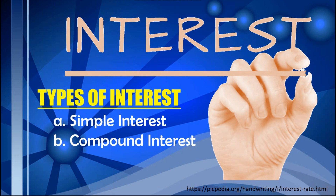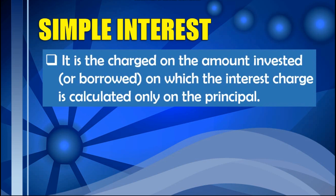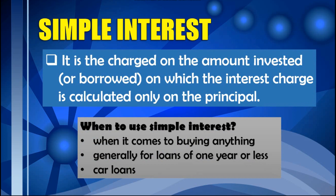There are two types of interest: simple interest and compound interest. We will first focus on simple interest. Simple interest refers to the charge on the amount invested or borrowed, where the interest charge is calculated only on the principal. Simple interest is usually used when buying anything, generally for loans of one year or less, and also for car loans. The computation for simple interest is quite straightforward — it is the fastest way to compute for interest.